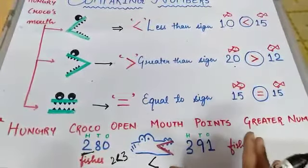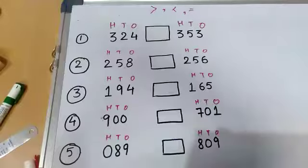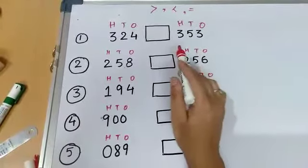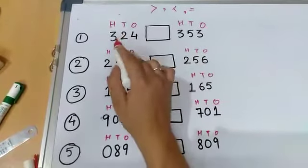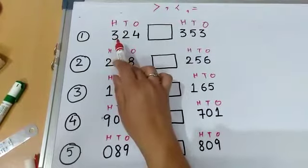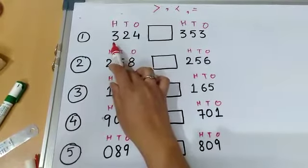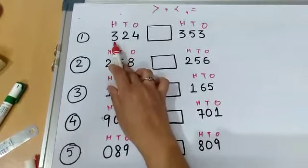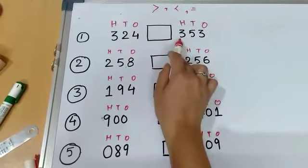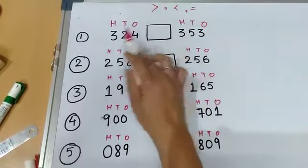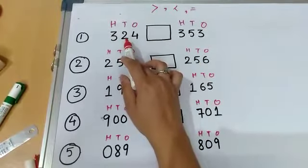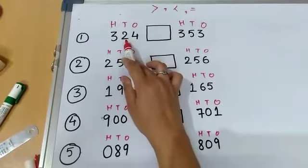Now we will solve some questions. Here are some questions. Let us see how to compare the numbers. For comparing the numbers, the first rule is that we look at the 100th place, digit at 100th place.